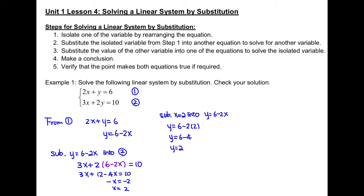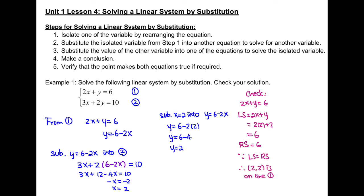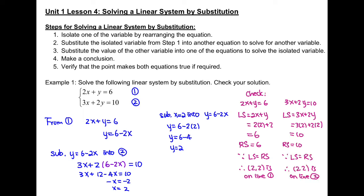Let's check our solutions before making a conclusion. From equation 1, we know 2x plus y equals 6. Substituting x equals 2 and y equals 2 into the left-hand side, we get 6, which matches the right-hand side. So the point (2, 2) is on line 1. Checking equation 2, the left-hand side 3x plus 2y gives 10, and the right-hand side is also 10. Therefore (2, 2) is also on line 2. The solution is at (2, 2).